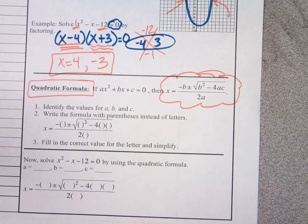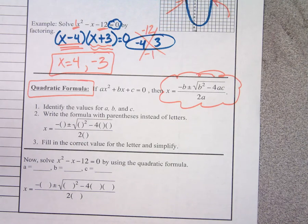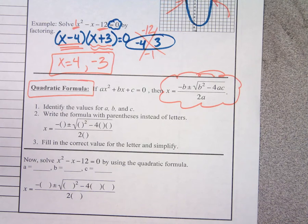Instead of saying negative B, I'm going to say the opposite of B. So the formula goes: x equals the opposite of B, plus or minus square root, B squared minus 4AC, all over 2A. Ever since I learned the song, I can't do a problem without singing it in my head.